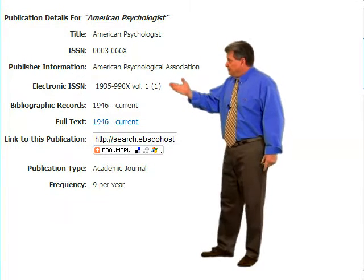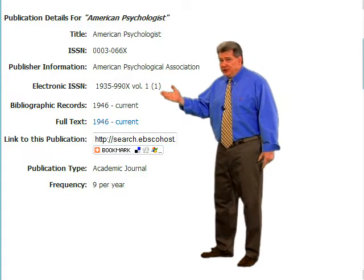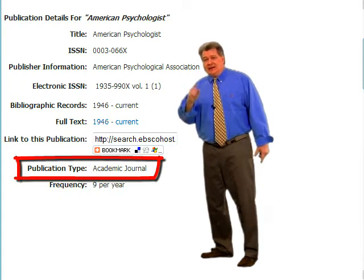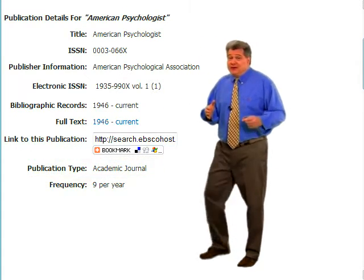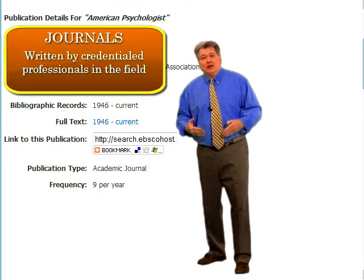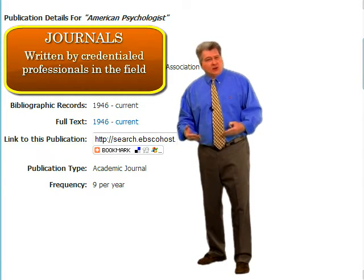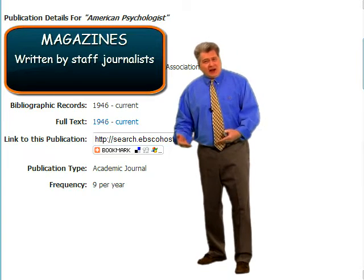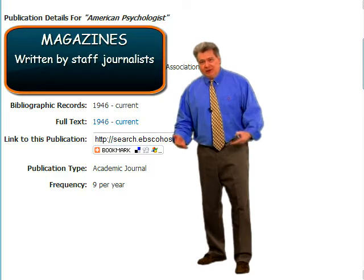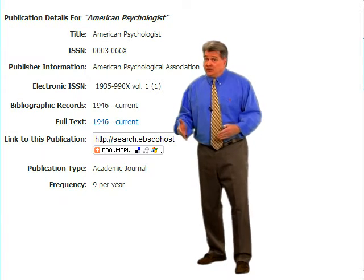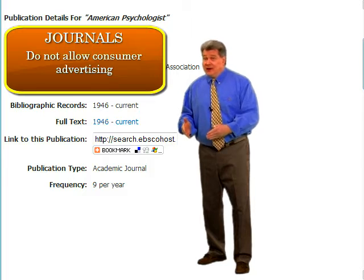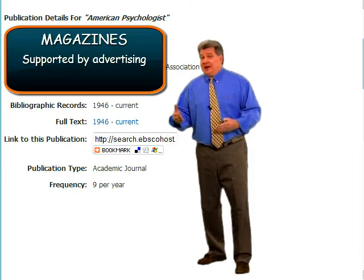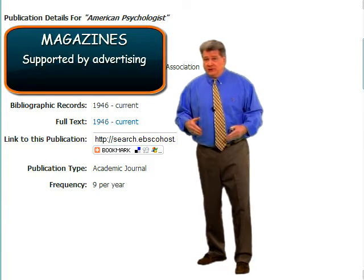Looking at this page, let's scroll down to the bottom. We know this is a periodical — but what kind of periodical is it? Look down at the bottom there: academic journal. Remember there's a big difference between journals, which are written by professionals with degrees and other credentials in a field, and a magazine. Magazine articles are written by staff writers who are generally journalists who write about a lot of different topics. Also, most journals do not take consumer advertising and are not beholden to advertisers, whereas magazines do take advertising and that advertising also influences content.